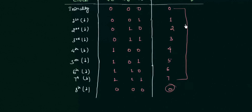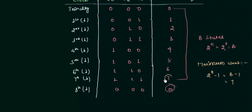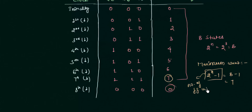The number of states is equal to 2 to the power n, where n is the number of flip-flops. So 2³ = 8 states. The maximum count is 2^n − 1, which gives 8 − 1 = 7. You can see that the maximum number you can count is 7 in this case, and you can easily find it using 2^n − 1.